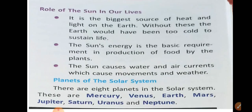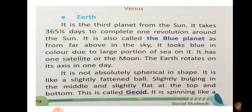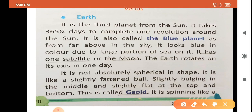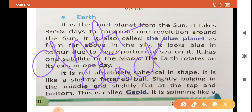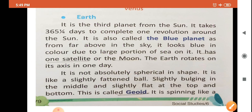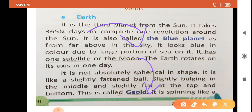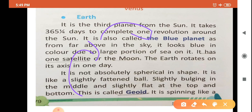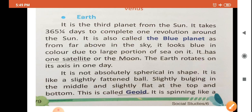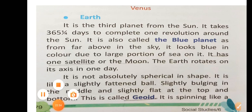The earth completes one complete circle in nearly 24 hours. This rotation is anticlockwise — our clock moves one way but the earth moves in the anticlockwise direction around the sun.